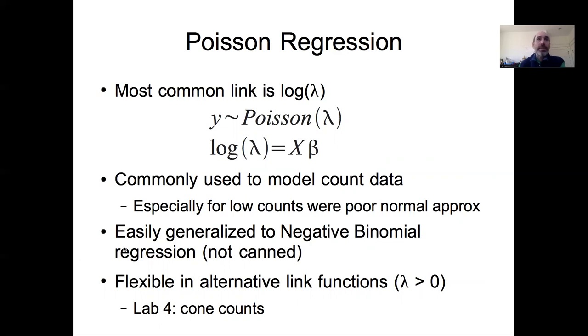I should note that the Poisson isn't the only option for count data. We could easily generalize what we're doing here with the Poisson regression into a negative binomial regression, though it's often easier to define pre-existing functions to do a Poisson regression and you might have to write a bit more code for the negative binomial. I should note that it is particularly flexible to alternative link functions because you just need a function that is always positive. And also note that we've encountered the Poisson regression before as part of lab four when we were dealing with the fecundity of pine trees in response to ambient and elevated CO2 concentrations.